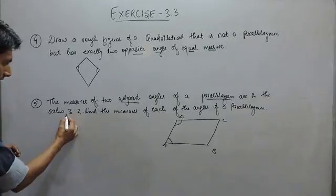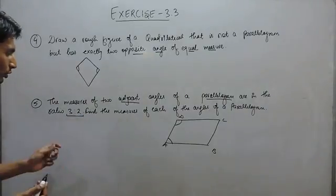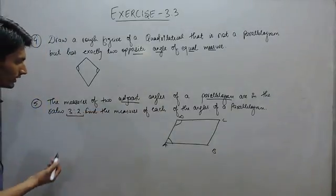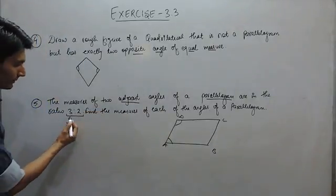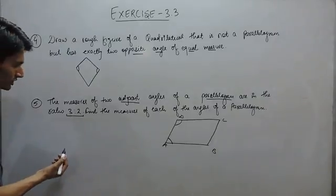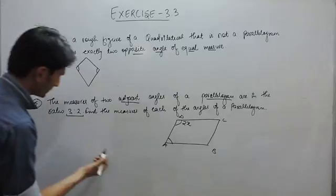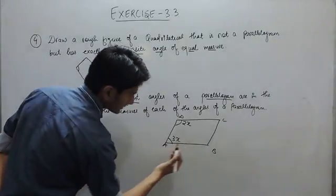Since we are given a ratio and want to find the value of these angles, we remove the ratio sign and multiply by a constant. This angle could be 2x and this could be 3x.